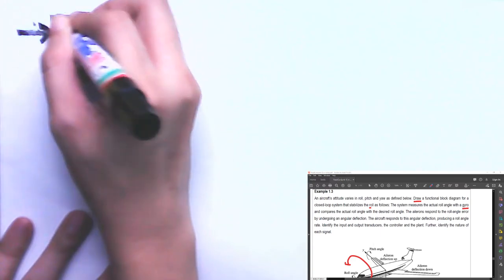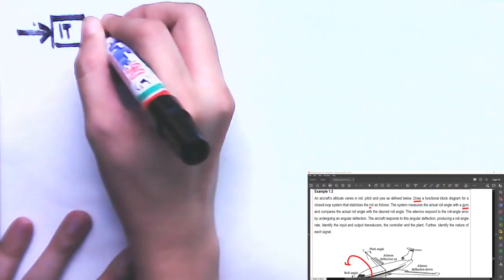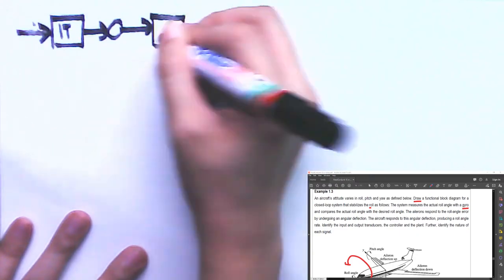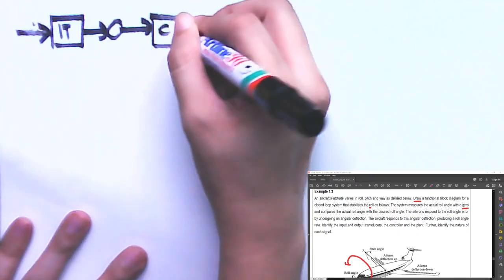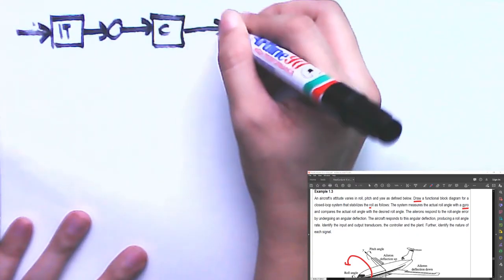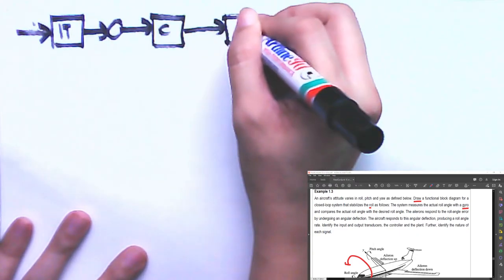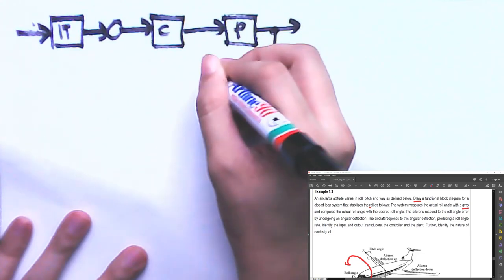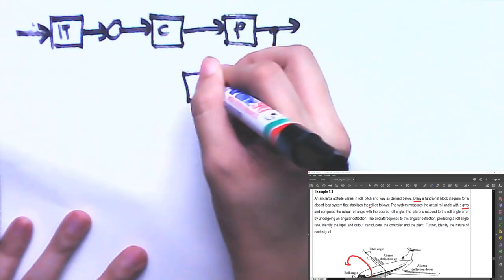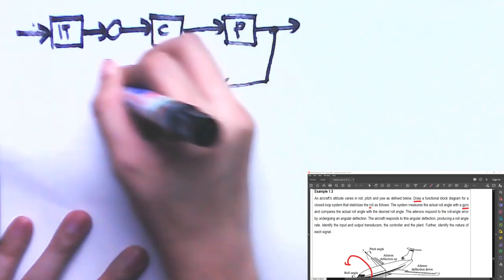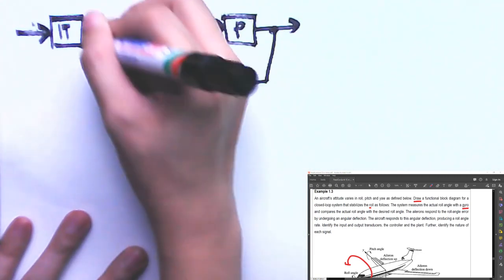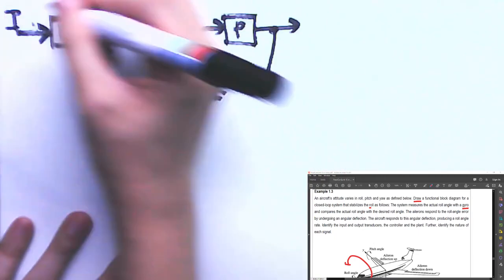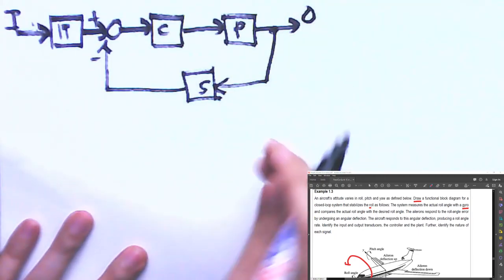We have: input, input transducer, summing junction, controller, plant, output, sensor, and feedback. The input is the desired roll angle and the output is the actual roll angle.